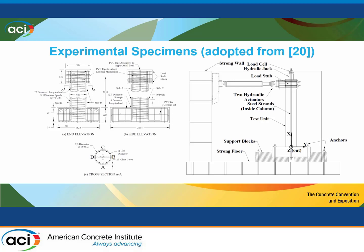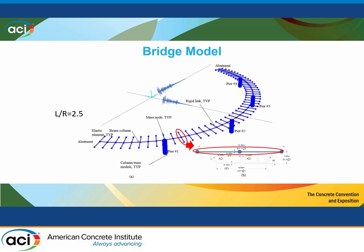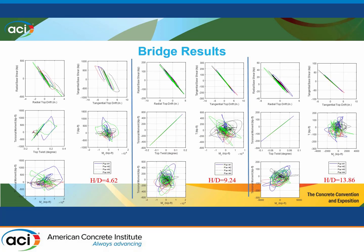The method has been validated with testing — I'm not sure whether torsion was induced in that test or just bending — but the method was calibrated and validated with testing. We see here torsional and flexural behavior of this column, and it is applied in a case study of a curved bridge in-plane with four circular columns, showing nonlinear results in terms of material behavior including torsion.